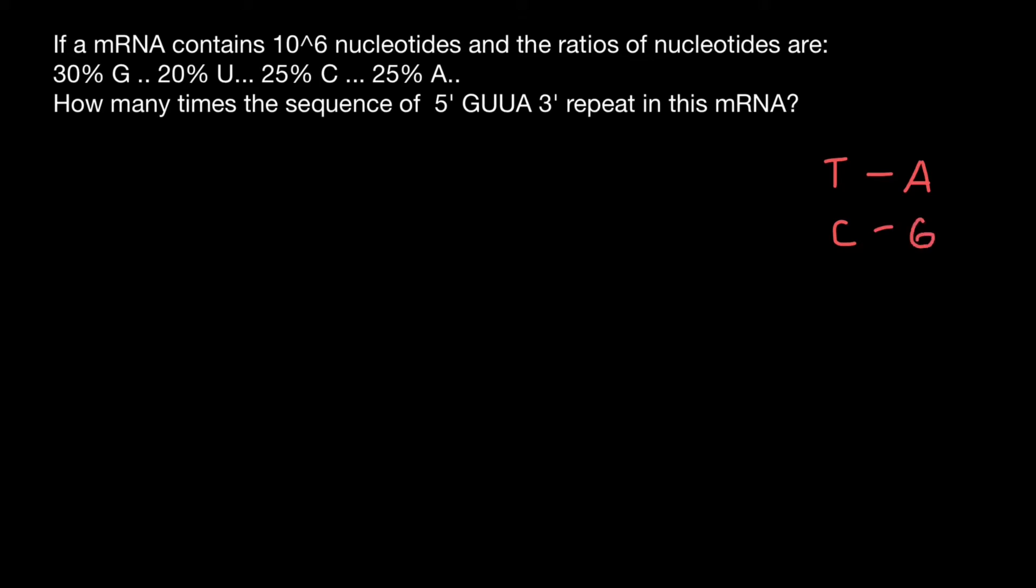And for example, if we have 20% of thymines, that means that we also would have 20% of adenines. And if we have 30% of cytosines, we also would have 30% of guanines.